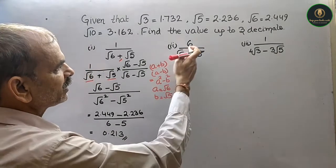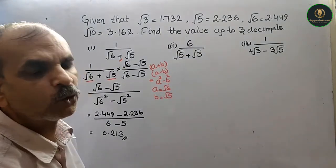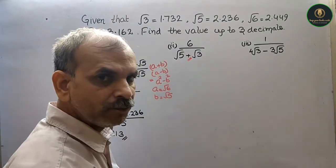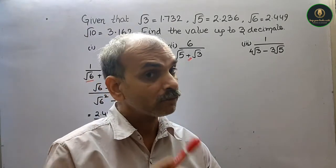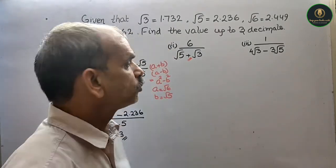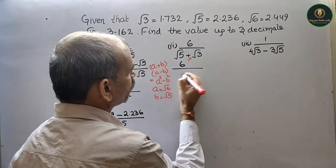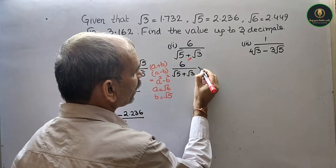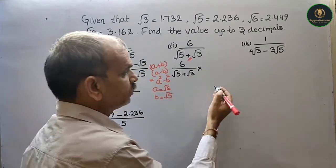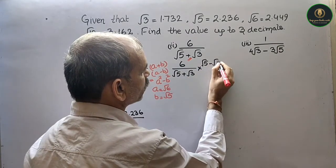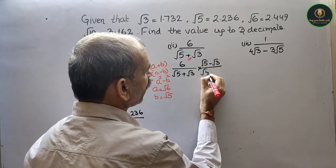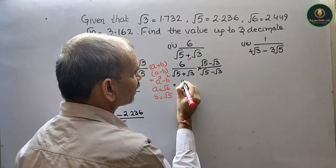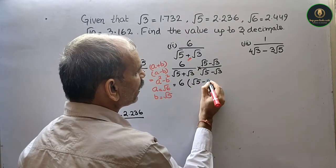Second वाला देखो: 6 by root 5 plus root 3. तो यहाँ पर plus है, तो हम rationalize करेंगे minus के साथ. तो यह आपका क्या आएगा: 6 by root 5 plus root 3 है, तो we will multiply and divide by root 5 minus root 3, by root 5 minus root 3. तो that is equal to — उपर देखो: 6 into root 5 minus root 3.